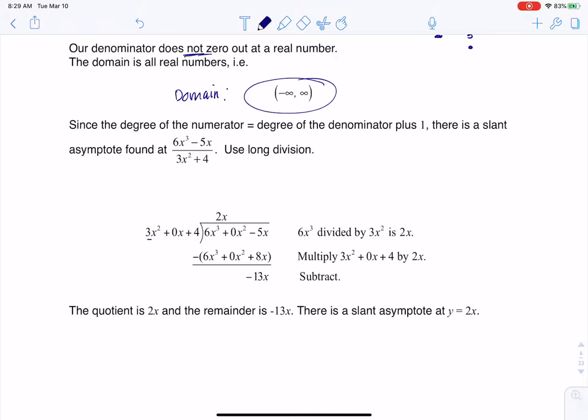So my divisor - I have 3x squared plus 4, but I need a 0x as a placeholder. And then my numerator here - I had 6x cubed minus 5x, but again, I need a placeholder.